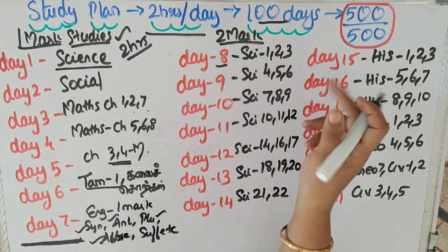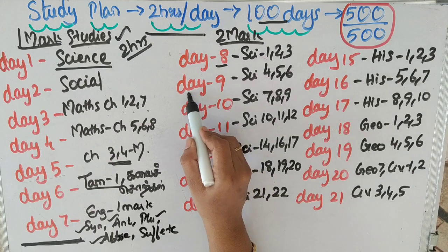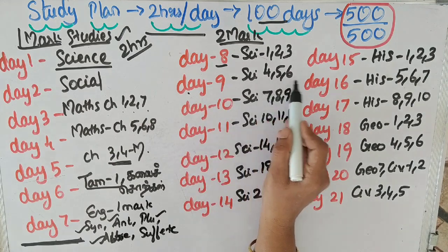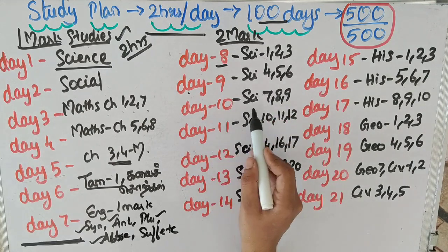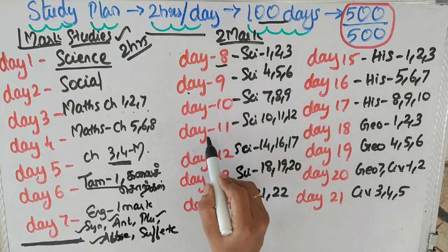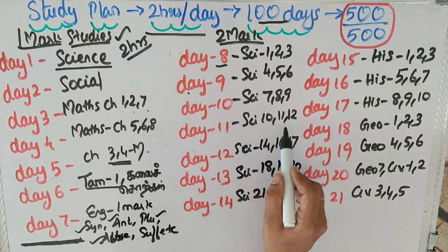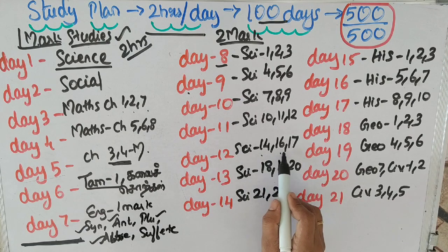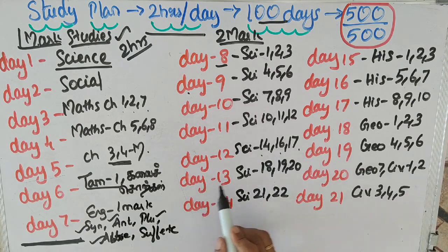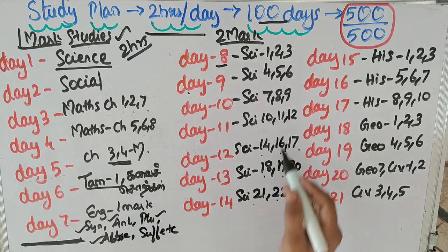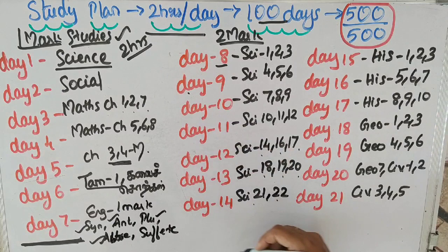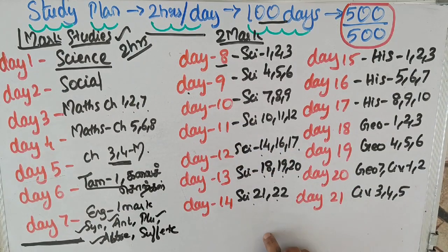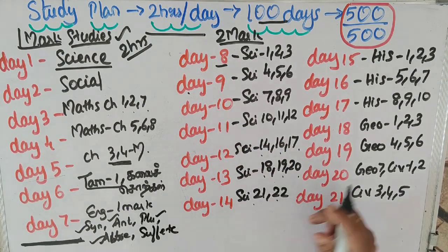Day 8 covers Science lessons 1, 2, 3. Day 9 is Science 4, 5, 6. Day 10 is Science 7, 8, 9. Day 11 is Science 10, 11, 12. Day 12 is Science 14, 16, 17. Day 13 is Science 18, 19, 20. Day 14 is Science 21 and 22 - all covering 2-mark questions.